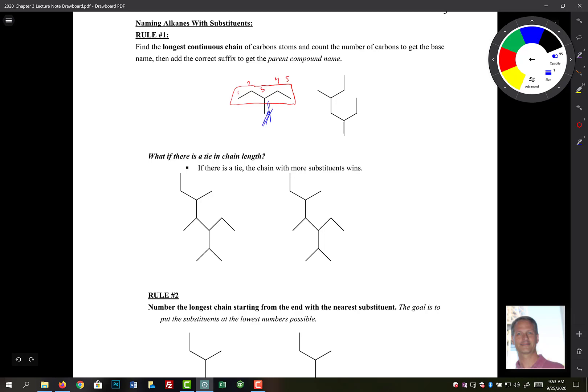So the parent name of something with five carbons is pent, and the suffix is ane. And there we have it, pentane. Now, that's not the full name of this molecule because we have something sticking off of us right here.